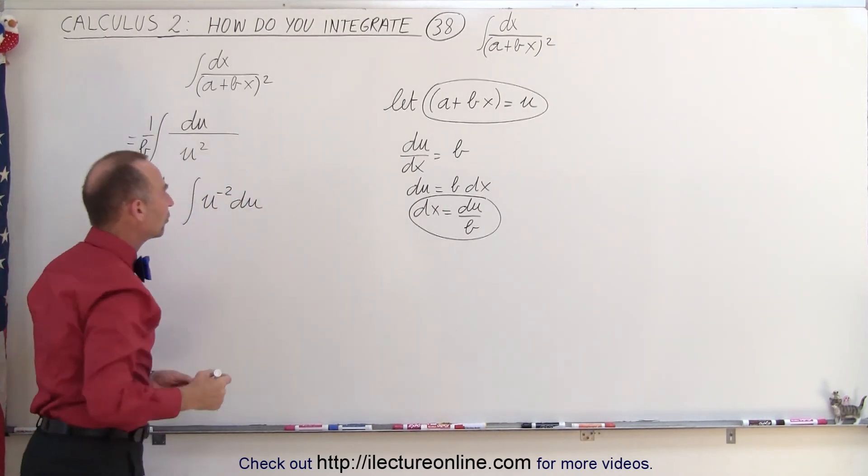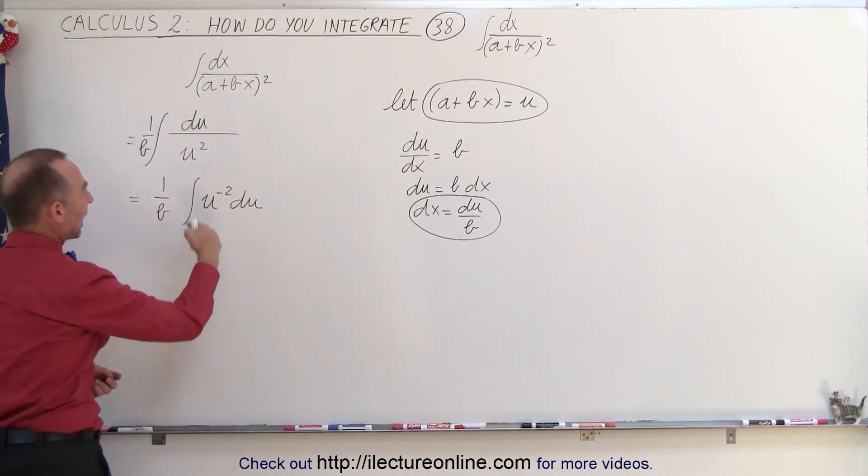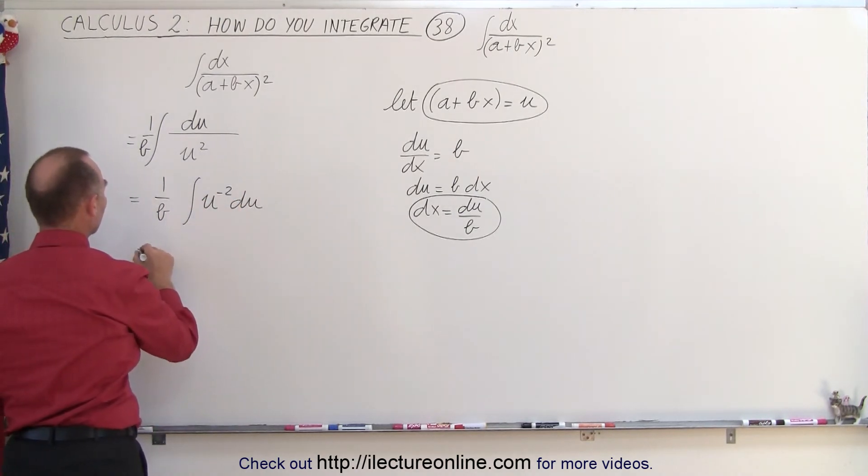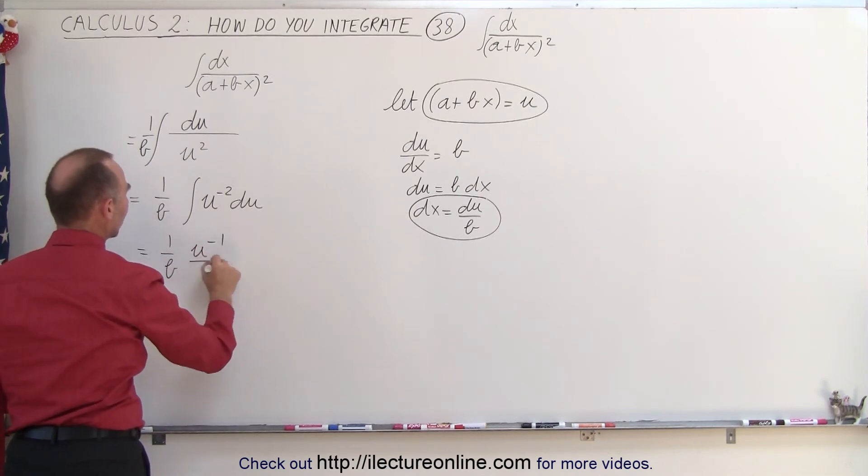And then we simply use the rule of integration, where we add 1 to the exponent, divide by the new exponent, so this is equal to 1 over b, times u to the minus 1, divided by the new exponent, plus a constant of integration.